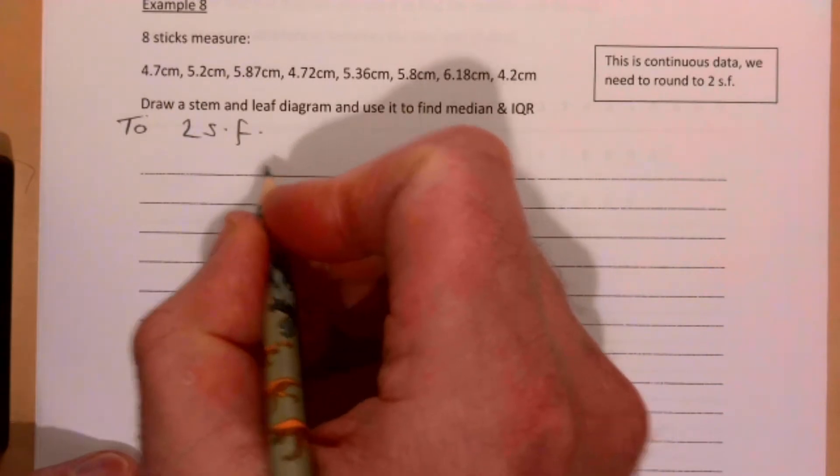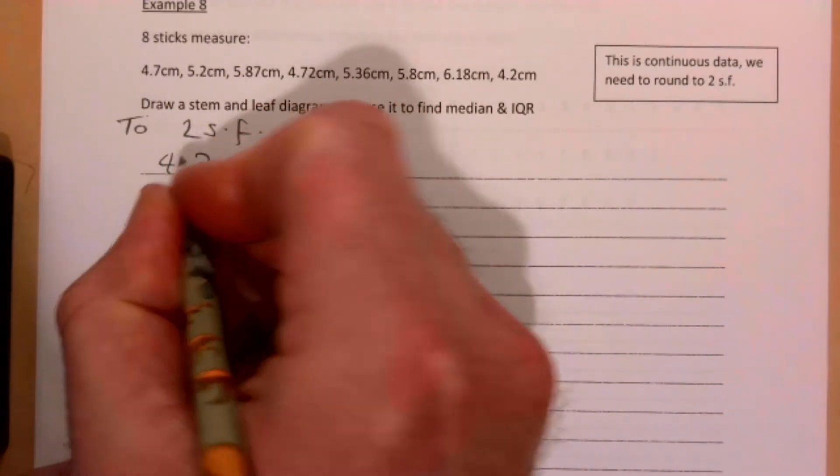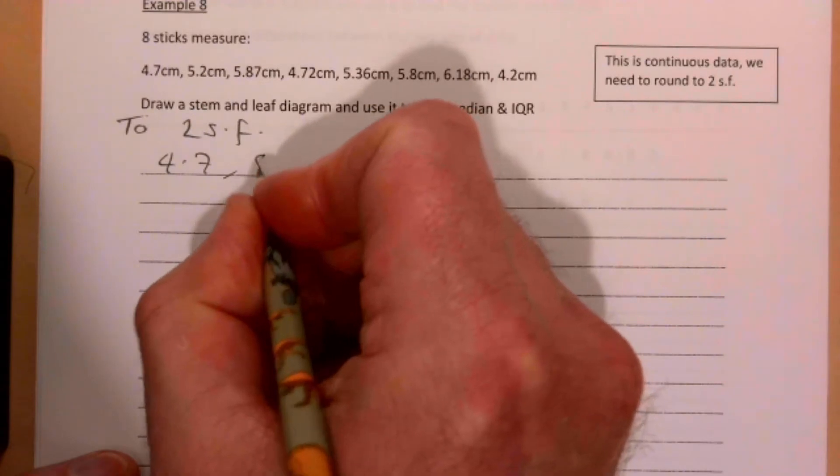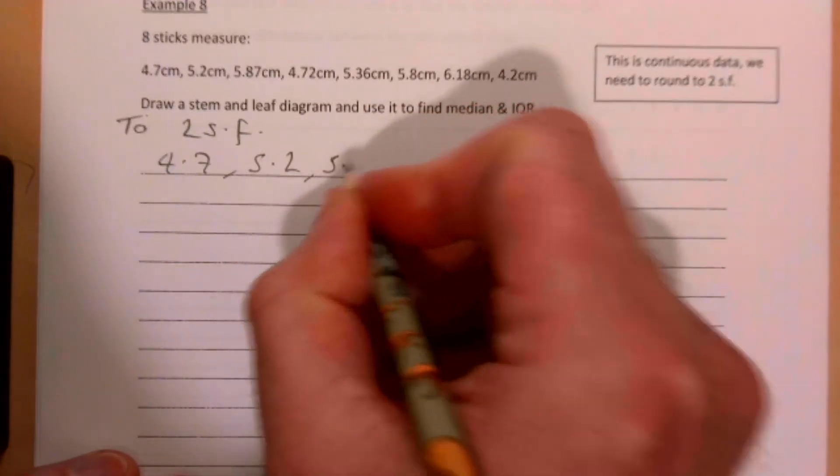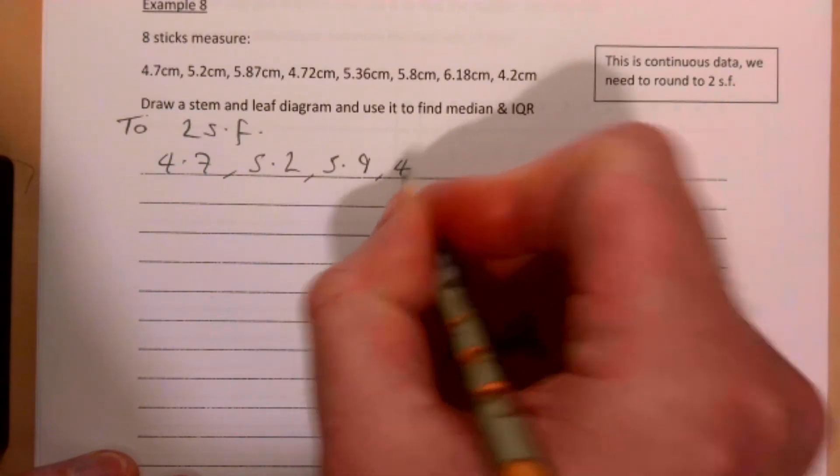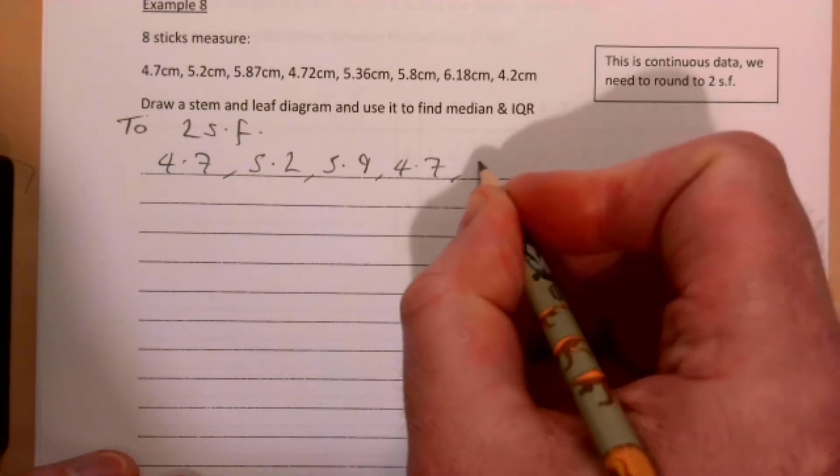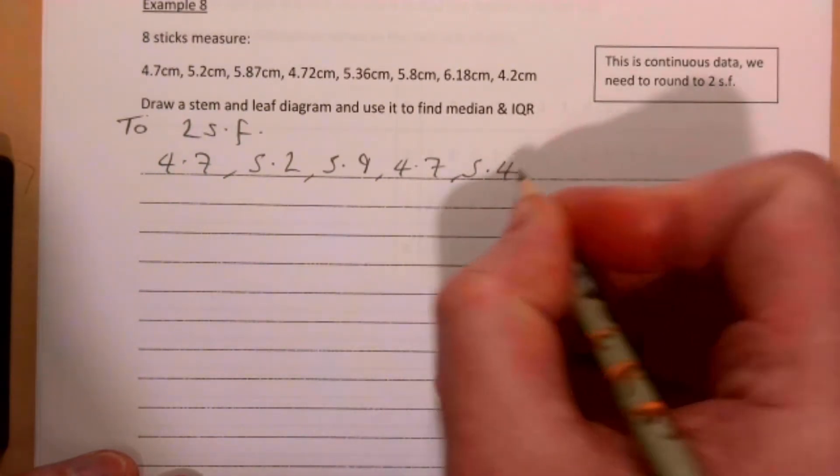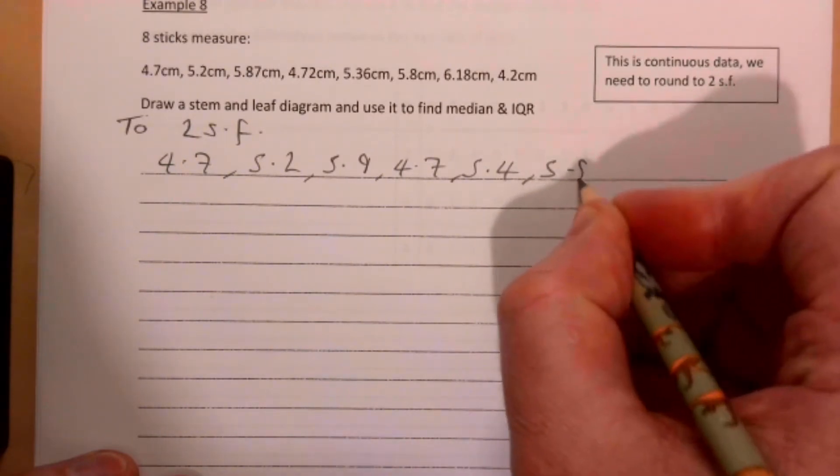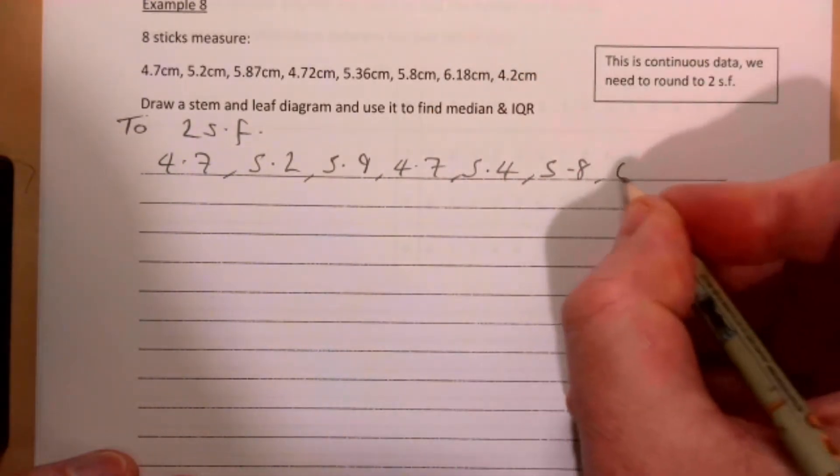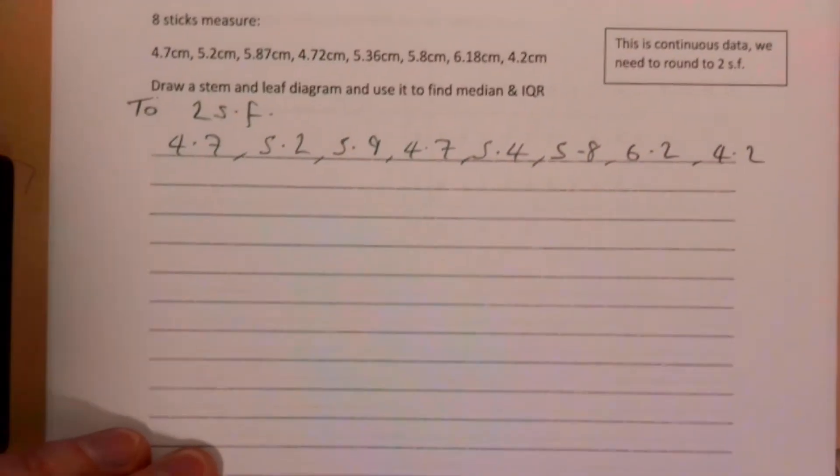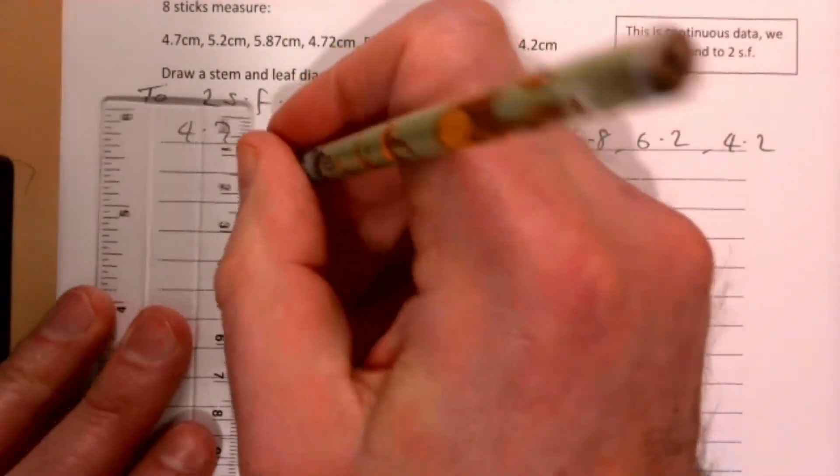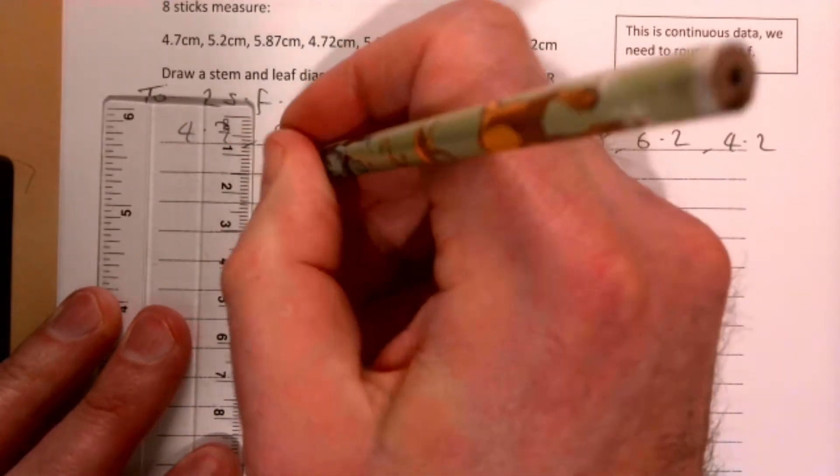Each of these to two significant figures is going to be 4.7, 5.2, 5.9, 4.7, 5.4, 5.8, 6.2, and 4.2. So let's first of all do our unordered stem and leaf diagram.